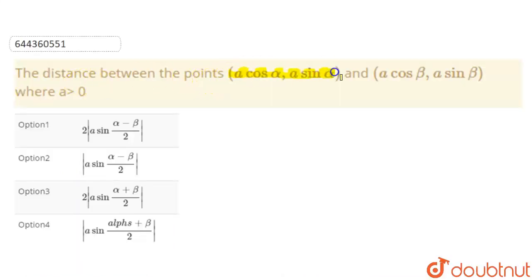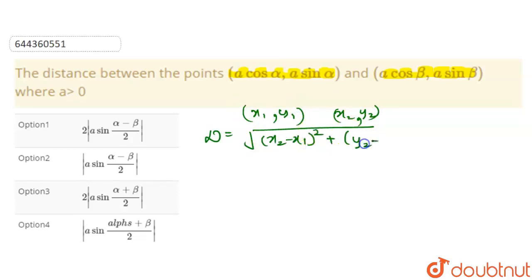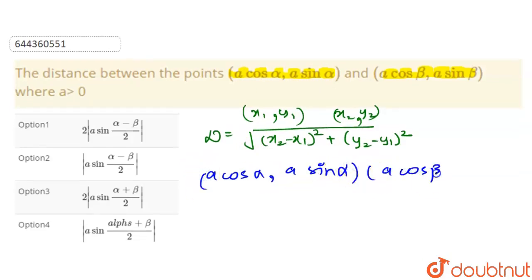Today our question is: the distance between the points (a·cos α, a·sin α) and (a·cos β, a·sin β), where a is a positive integer. We know that the distance between two points (x₁, y₁) and (x₂, y₂) is the square root of (x₂ - x₁)² + (y₂ - y₁)².